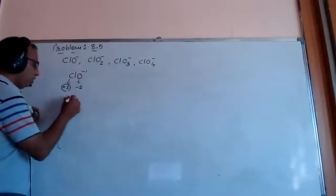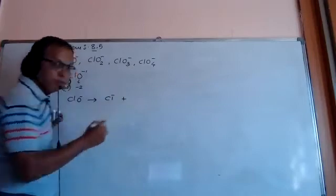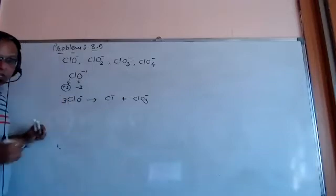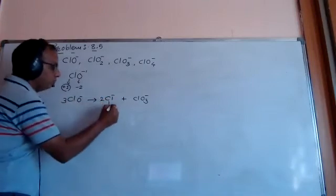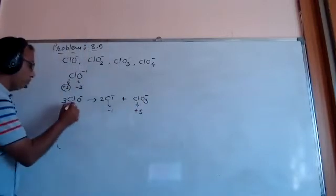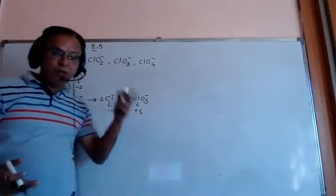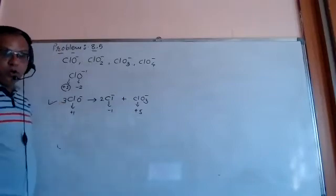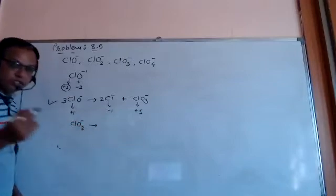The disproportionation reaction for ClO⁻ can be written as: 3 ClO⁻ → Cl⁻ + ClO₃⁻. In this reaction, chlorine goes from plus one to minus one, which is reduction, and from plus one to plus five, which is oxidation. Both oxidation and reduction are possible, confirming ClO⁻ undergoes disproportionation.